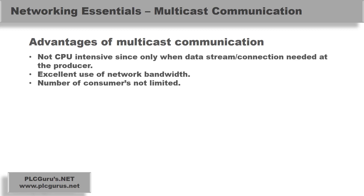The advantages of multicast: it's not CPU intensive since only one data stream connection is needed at the producer. It's an excellent use of network bandwidth. And the number of consumers is not limited. Remember with unicast, modules like the 1756 ENBT or EN2T explicitly state the number of concurrent connections they can maintain at any given time — and the more you pay, the more concurrent connections that module can maintain.